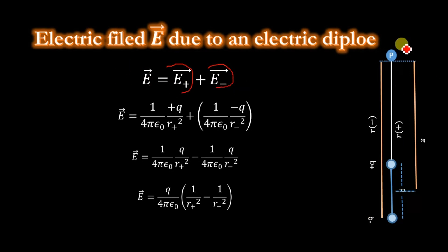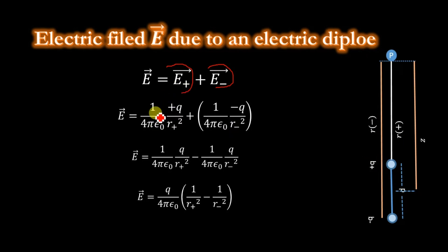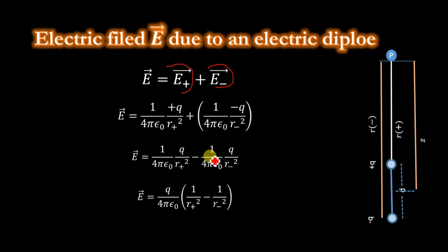The total electric field at point P equals the sum of E plus and E minus. We know that the electric field at point P due to a point charge is (1/4πε₀)(q/r²). So E plus = (1/4πε₀)(+q/r+²) and E minus = (1/4πε₀)(−q/r−²). Combining these, E = (q/4πε₀)[1/r+² − 1/r−²].